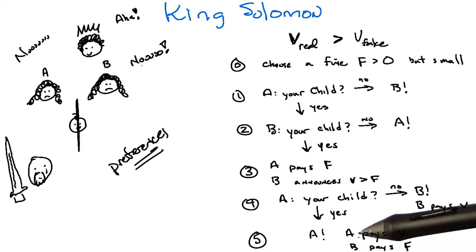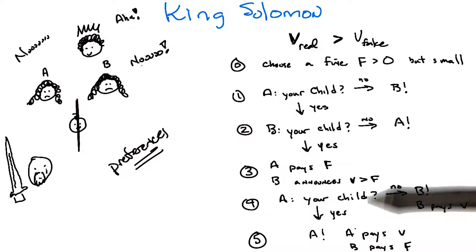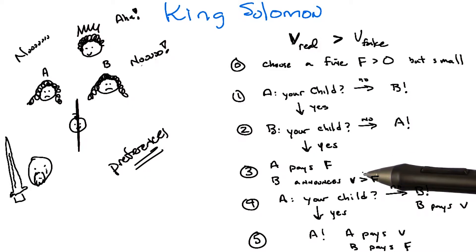So if B is the real mom, B has a value of V real, which is bigger than V fake, which is A's value. So when B announces the value, B probably should announce V real because B is going to want to spend that or wouldn't want to not get the baby having not spent that amount, right? Would have regret for that.